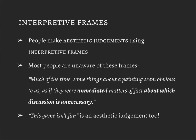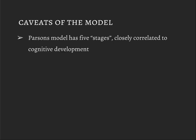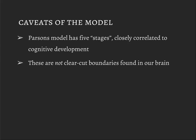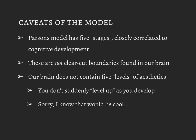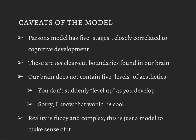So there are some limits to this model. His model has five stages, which have to do with cognitive development, and I'll explain as we go through. These are not clear-cut boundaries in your brain — there's no section that does this level or that level, and you don't level up as you develop your mental skills. Reality is fuzzy and complex; this is just a model to make sense of it.